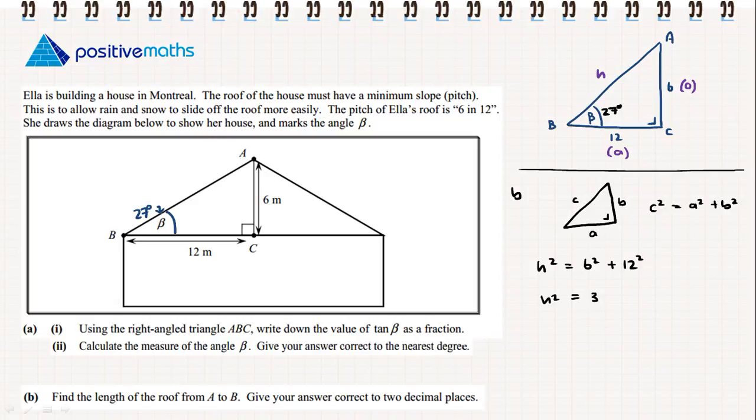So h² is going to be equal to 36 plus 144. h² will therefore be equal to 180. h will be equal to the square root of 180. So therefore, h is going to be equal to 13.42.